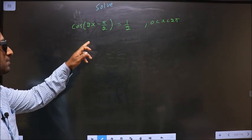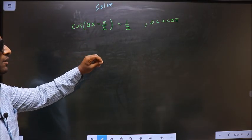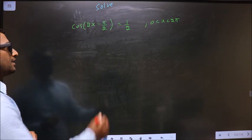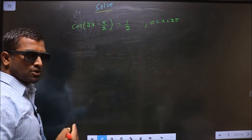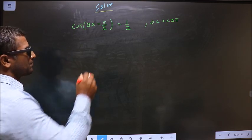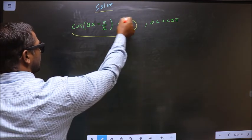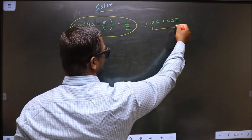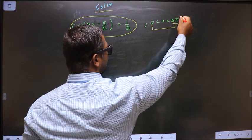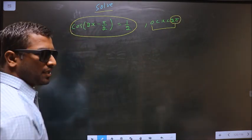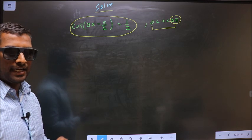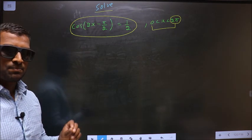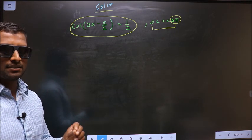Solve cos(2x - π/2) = 1/2 where x lies in the interval 0 to 2π. Here they told you to solve, so you should find the values for x satisfying this equation that also lie in the interval 0 to 2π. Since you have 2π, you should get the answer in radians — so put your calculator in radians mode.